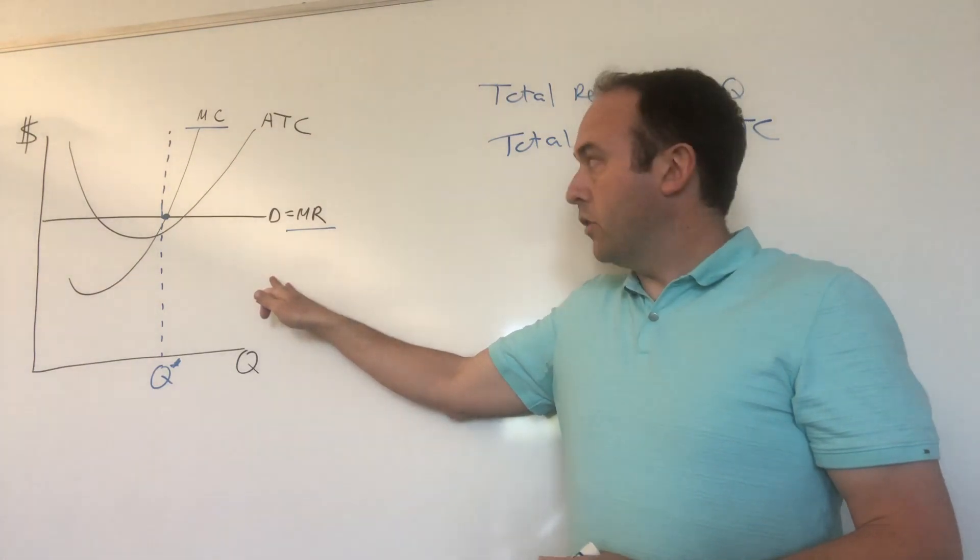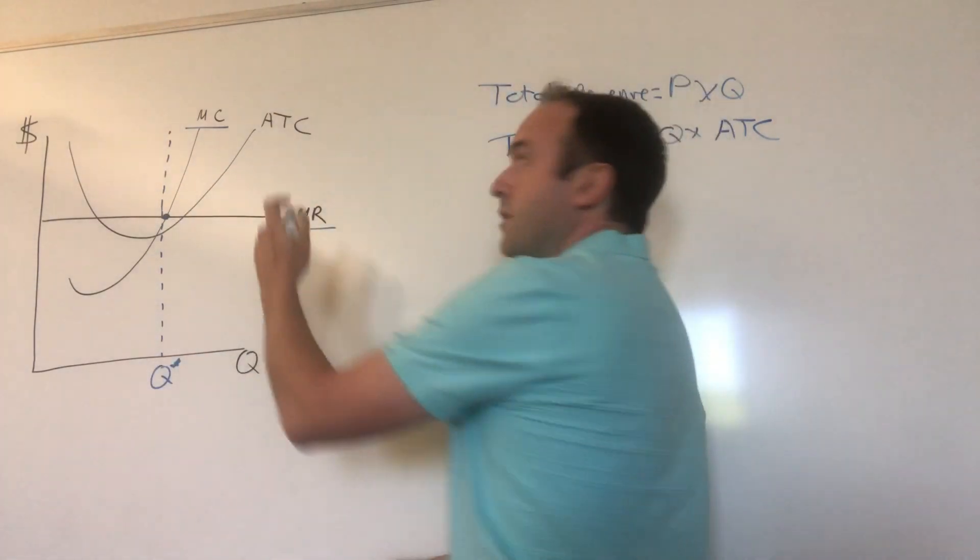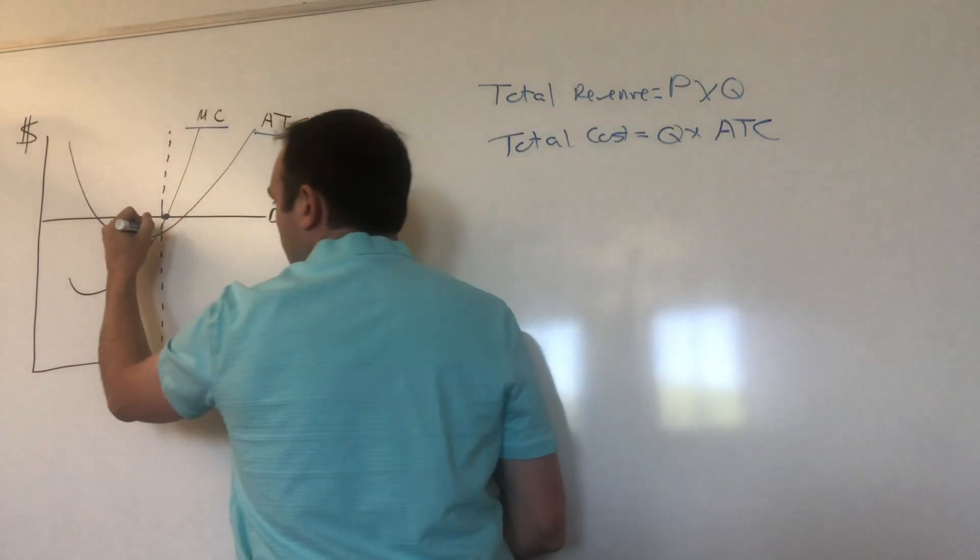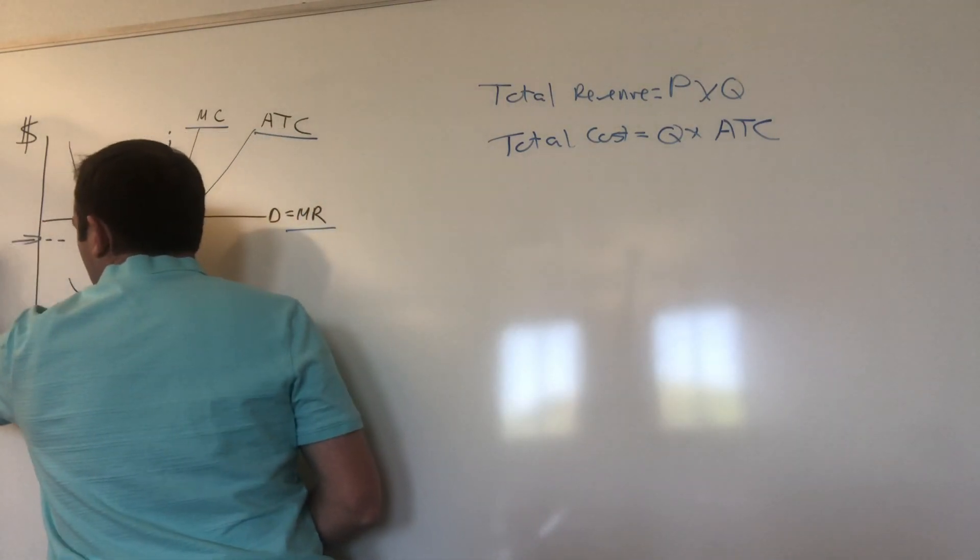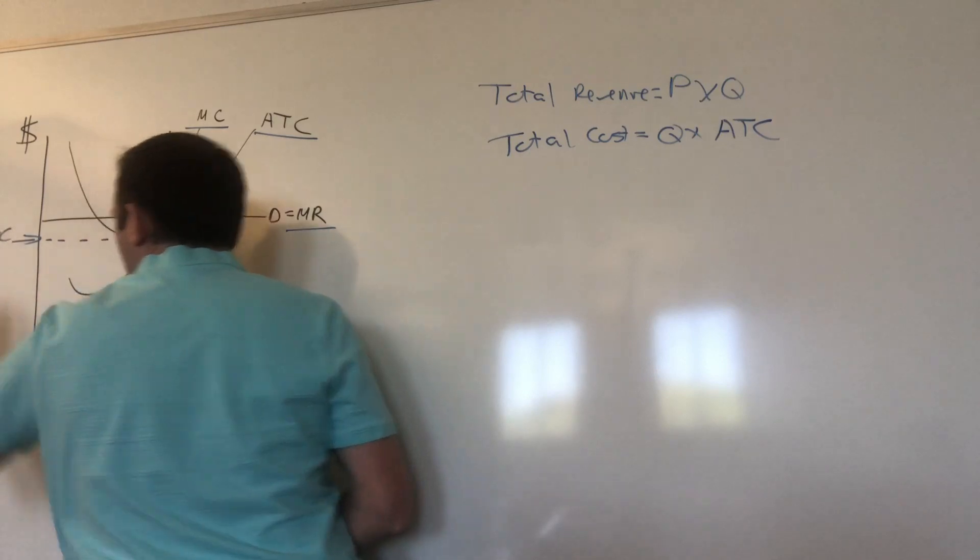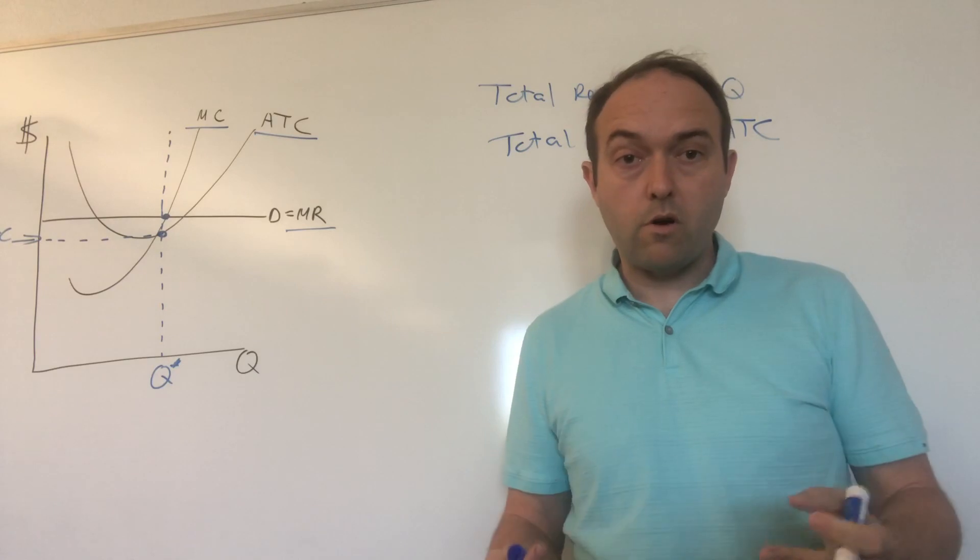ATC we get from the chart over here. To find our average total cost, we're going to find where this vertical line at Q star intersects the average total cost curve. So they intersect right there. Go to the left of that. And the value you get is the ATC that you're looking for for your firm.